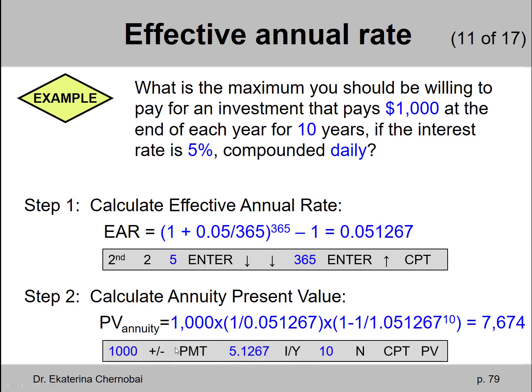So your annuity payment is $1,000. Your annuity interest rate IY is 5.1267 which is the effective rate. And the annuity number of payments is 10 as given. Compute present value. The answer is $7,674.